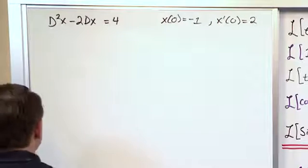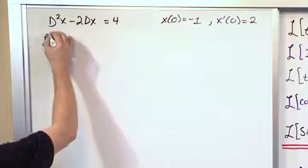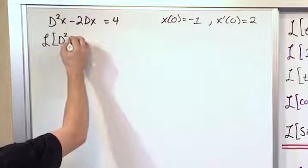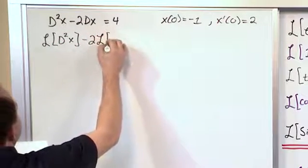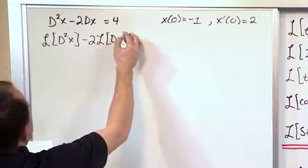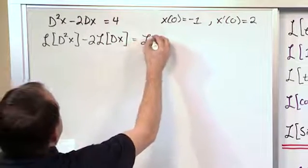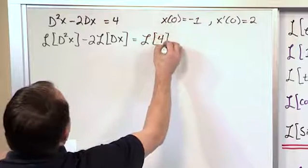So let's first apply the Laplace Transform to both sides. We'll have second derivative minus—now we can pull the 2 out and have the Laplace operating directly on the first derivative. And then on the right-hand side we'll have the Laplace Transform of the number 4.